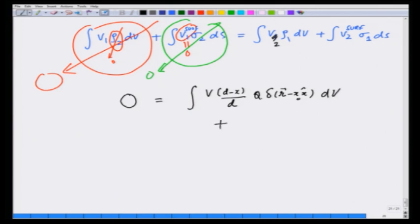v 2 surface. V 2 on the left surface is v sigma 1 d s. V sigma 1 d s gives me charge induced on the right surface. V 0, so that gives me 0.